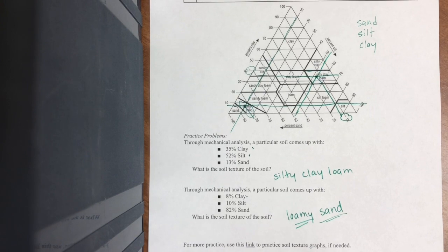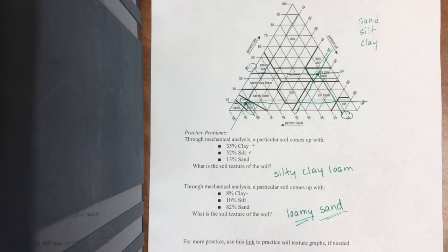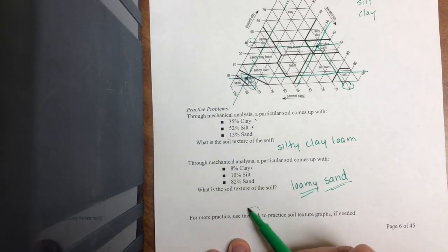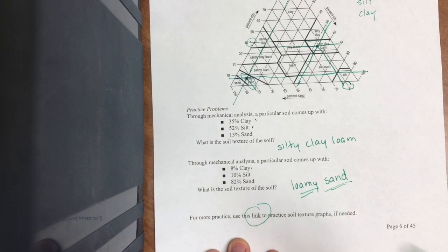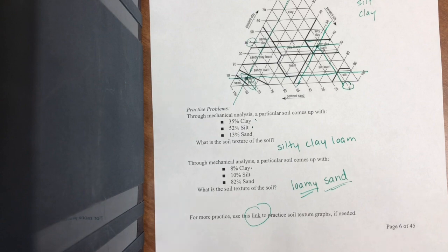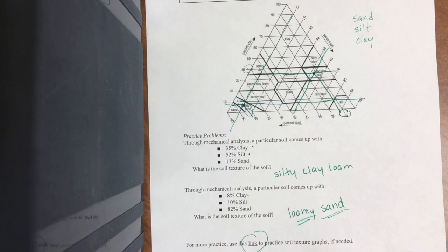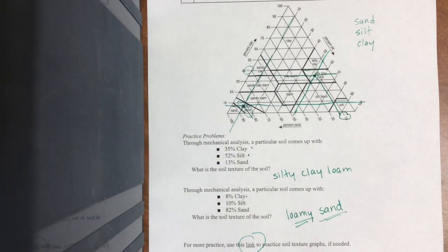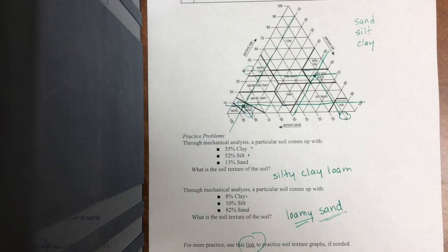If you're still struggling or want more practice, this is, I believe in the homework, but also right here, if you go to the electronic copy, that link has more practice where you can read a graph and it will score it for you. So that is how to do the soil texture triangle. They love this one on the AP test. So make sure you know it and understand it.